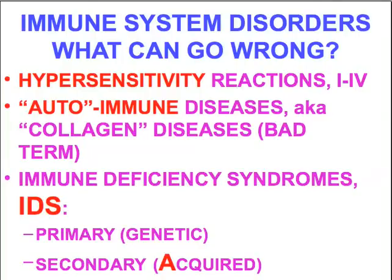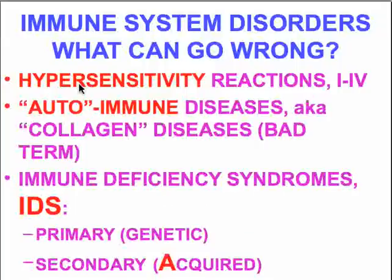I'd like to remind you that even though we have entitled this section as 'what can go wrong,' diseases can go wrong — there are autoimmune diseases and immune deficiency syndromes — but in hypersensitivity reactions it's not necessarily wrong. It's a right thing; it's the way the body deals with immune reactions.